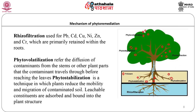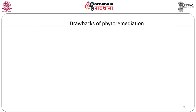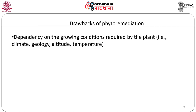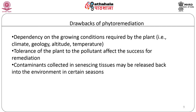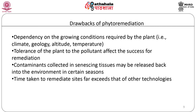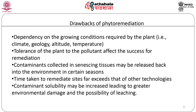Several factors limit the extent of metal phytoextraction, including metal bioavailability within the rhizosphere, rate of metal uptake by roots, proportion of metals within the roots, rate of xylem loading and translocation to shoots, and cellular tolerance to toxic metals. The phytoremediation process is also dependent on the growing conditions required by the plant, and tolerance of the plant to the pollutant affects the success of remediation. Contaminants collected in senescing tissues may be released back into the environment in certain seasons, and time taken to remediate sites far exceeds that of other technologies. Contaminant solubility may be increased, leading to greater environmental damage and the possibility of leaching.